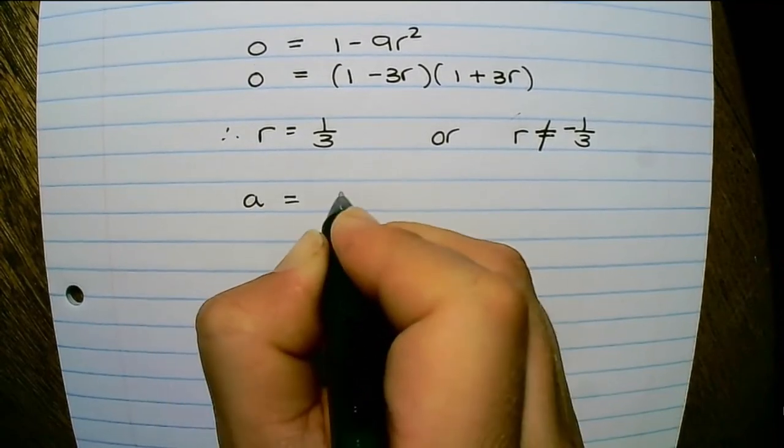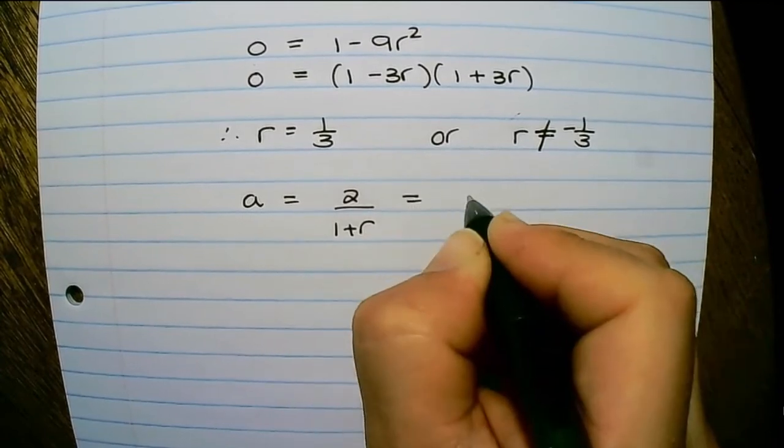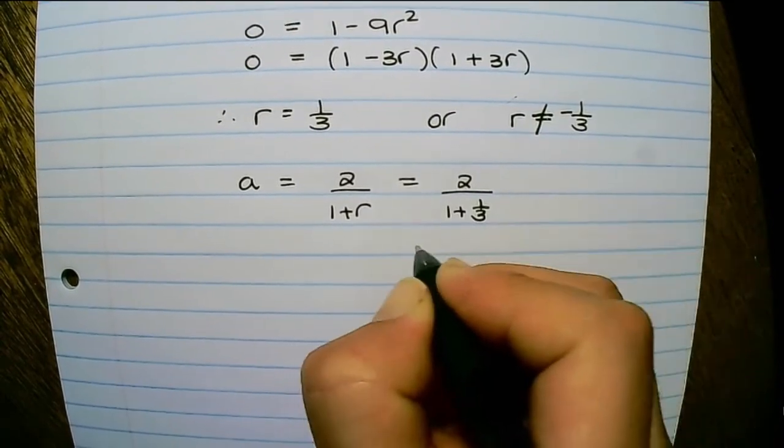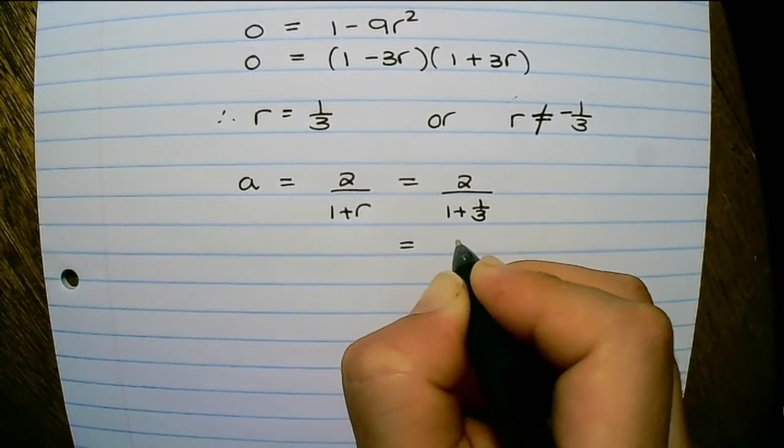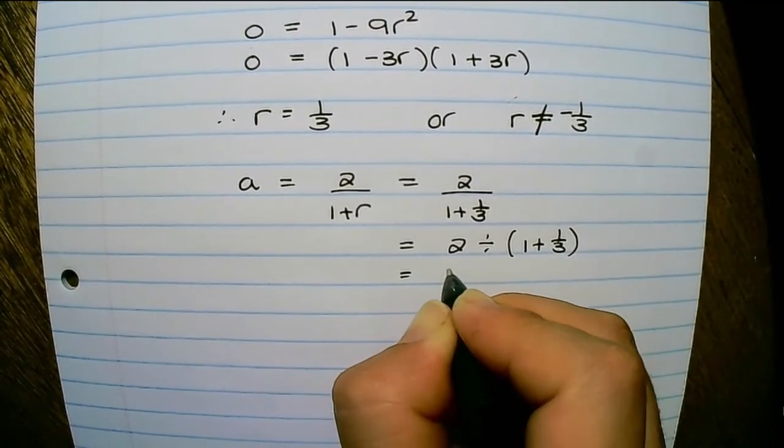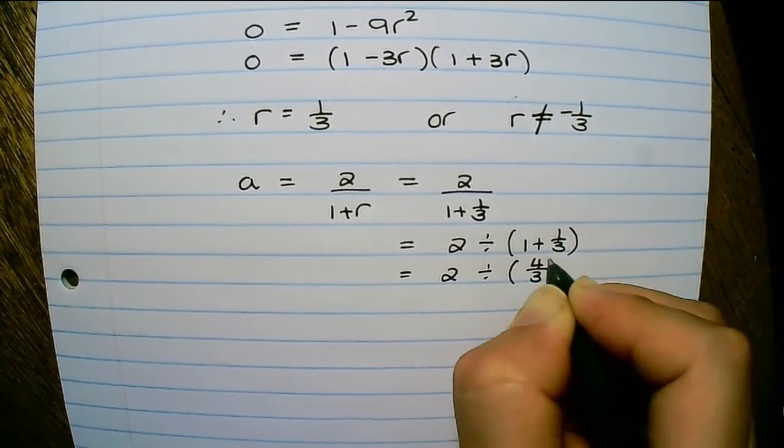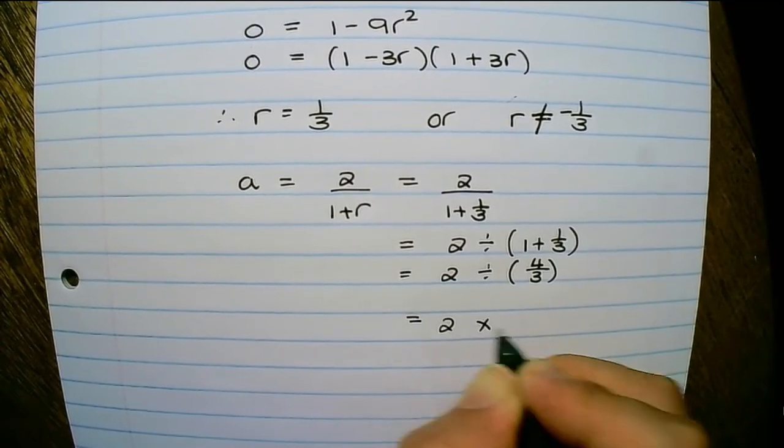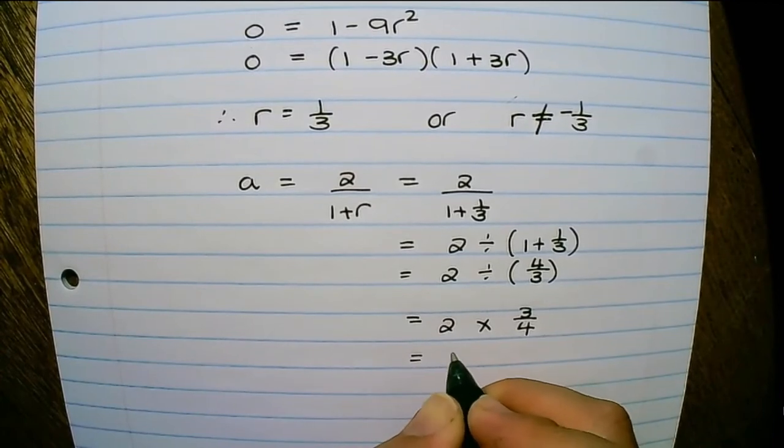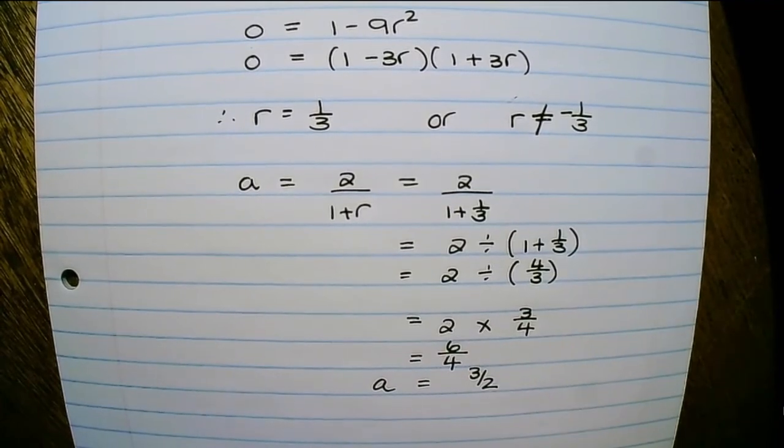And a equals 2 over 1 plus r, which is the same as 2 over 1 plus one third. And if I rewrite this again, it is 2 divided by 1 plus one third. That is the same as 2 divided by 4 over 3. And I can rewrite that in terms of multiplication. So it is 6 over 4. Therefore, a equals 3 over 2, if I simplify.